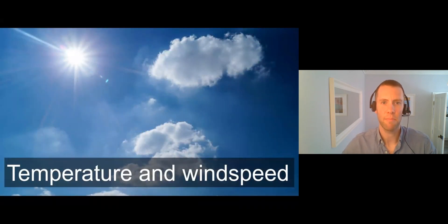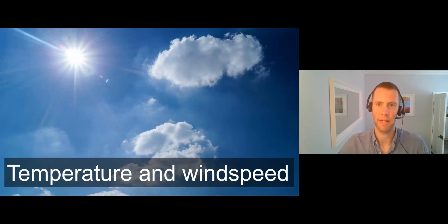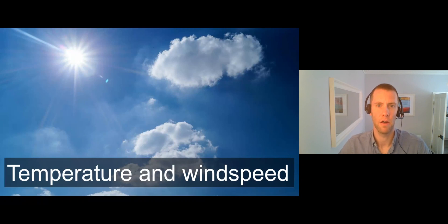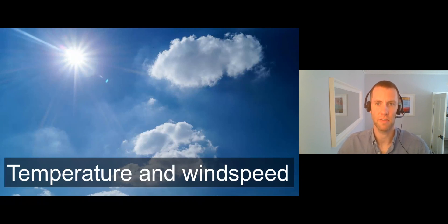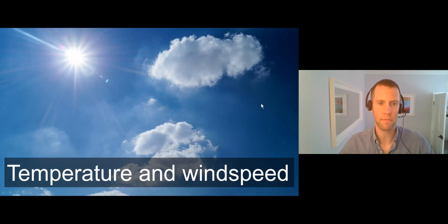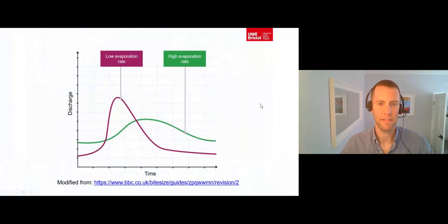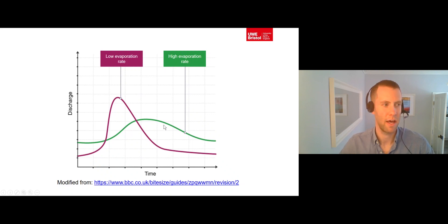The higher the temperature and wind speed in the drainage basin, the higher the rates of evaporation will be, from both vegetation and other surfaces on hill slopes, like soil and tarmac. This means that drainage basins with higher temperatures and wind speeds have lower levels of storm flow entering the channel due to their higher evaporation rates, and this results in a less flashy hydrograph.